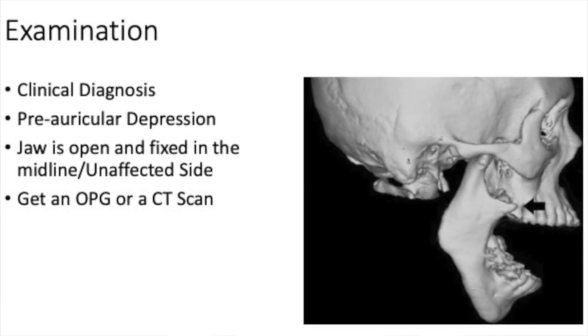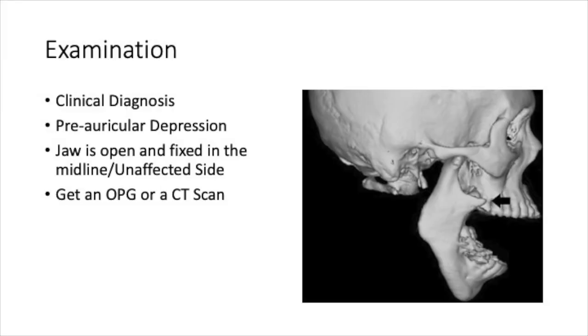TMJ dislocation is a clinical diagnosis based on the history that the patient is unable to close the mouth after yawning, with garbled speech. You can feel a preauricular depression on examination. The jaw will be open and fixed, either in the midline or deviated to the unaffected side. As with any facial trauma, get a CT scan of the facial bones or, if unavailable, an orthopantomogram.